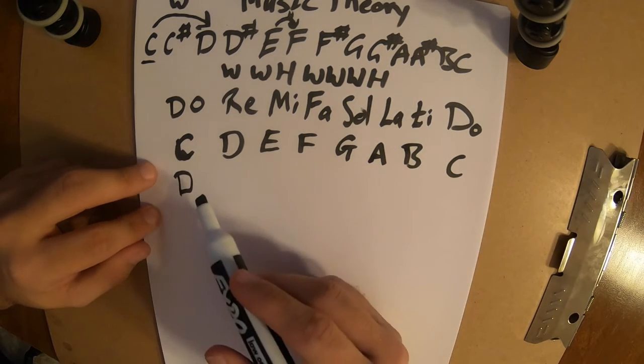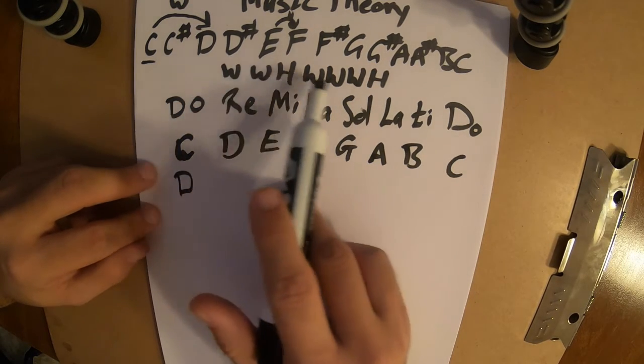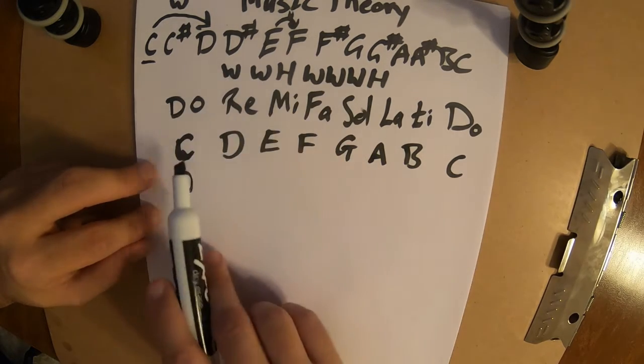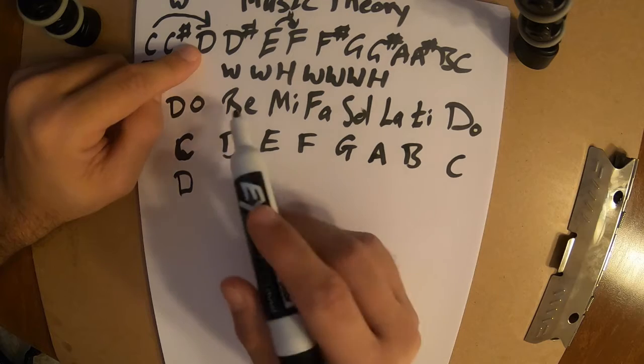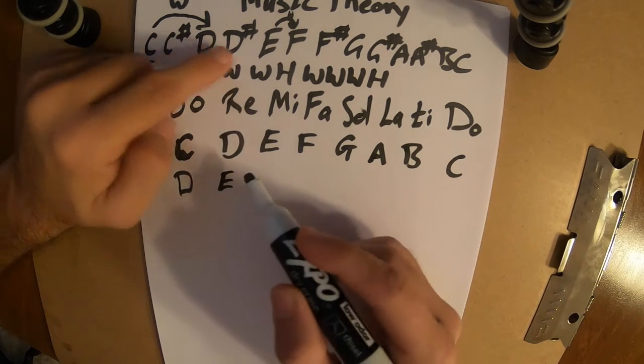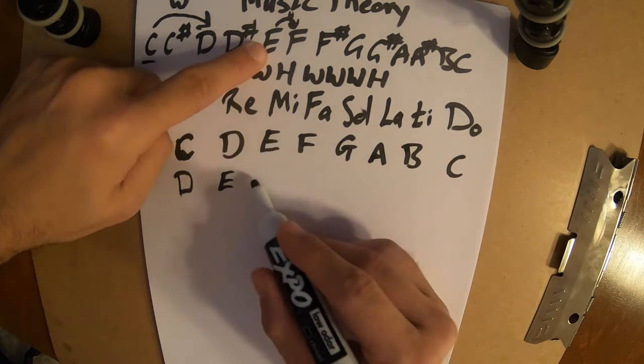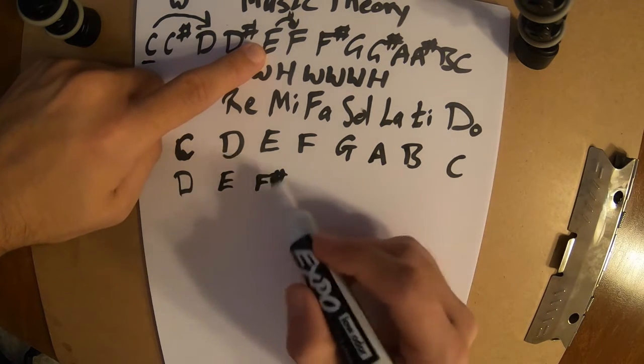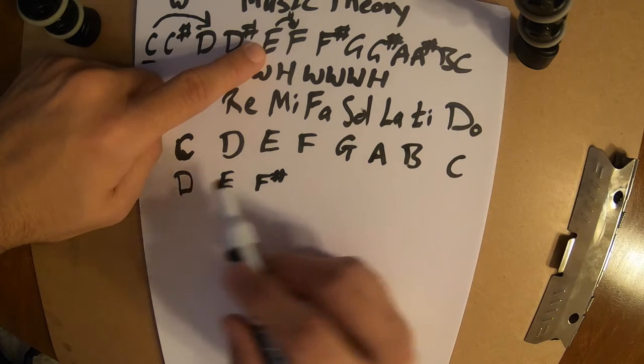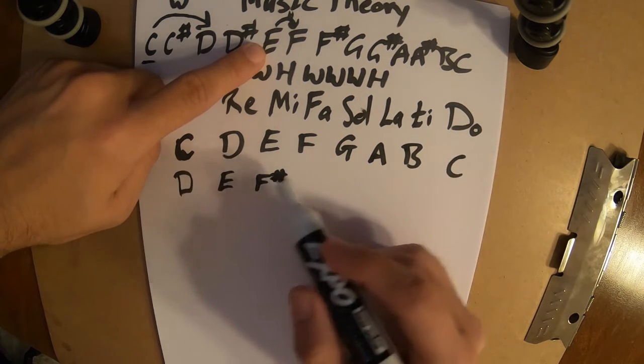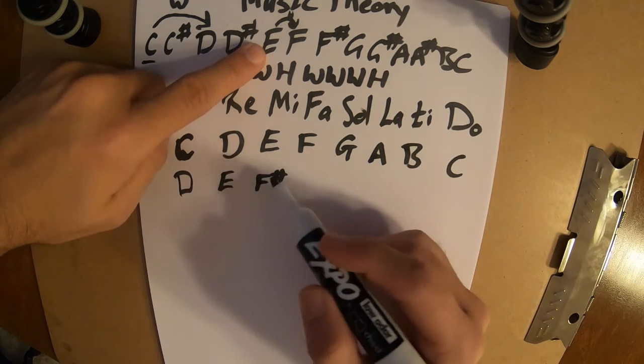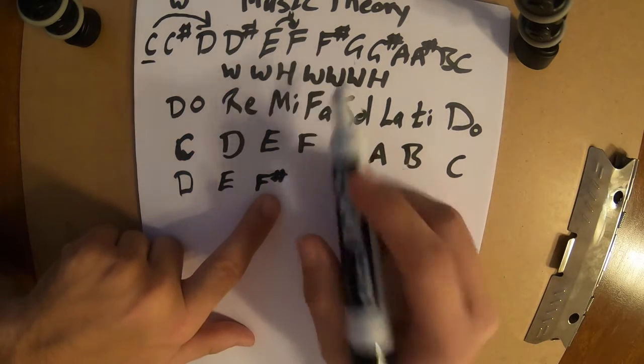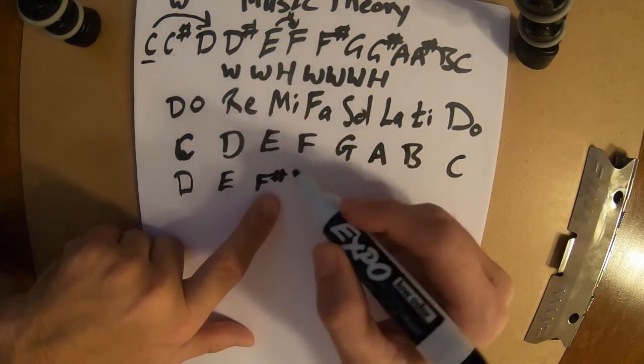But, what if Do was D? So D is our starting note. Well, then we would have to perform the same movements. Whole, whole, half, whole, whole, whole, half. Starting on D. So from D, whole step brings us to E. From E, we do another whole step. And we get F sharp. That's important because that's something that C and D don't have in common. They already had the D in common and the E in common. But now the Fs are different from each other. So we had a whole, whole. From F sharp, half step brings us to G.